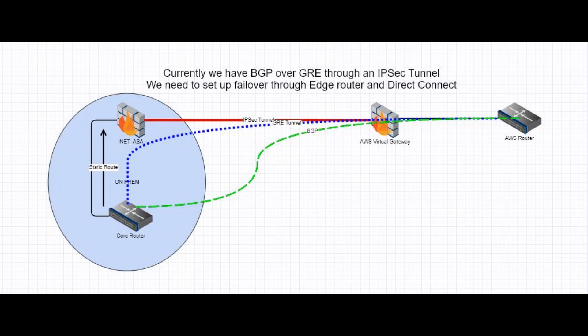AWS extensively utilizes GRE tunnels and IPsec tunnels. The production traffic happens between the core router and the AWS router. This production BGP traffic is transported over a GRE tunnel — the BGP is shown in green and the GRE tunnel in blue. The GRE tunnel between the core router and the AWS router is itself transported through the IPsec tunnel running over the internet between the INIT ASA and the AWS Virtual Gateway.